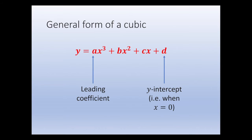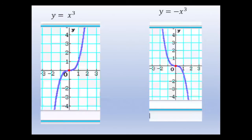The general form of a cubic function is y equals ax cubed plus bx squared plus cx plus d. Here, a — the coefficient of x cubed — is called the leading coefficient. And d, which is not associated with any x term, is the y-intercept, that is, when x equals zero.